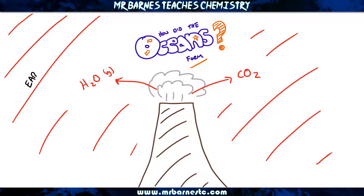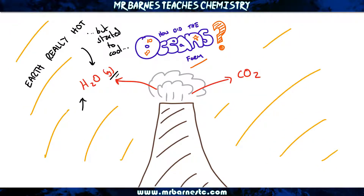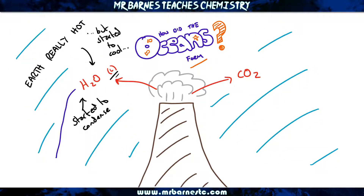When the Earth first formed it was really hot — above 100 degrees C — therefore water had evaporated and stayed as a gas. However, when the Earth started to cool, that water vapor started to condense and turned back into a liquid, which is water.